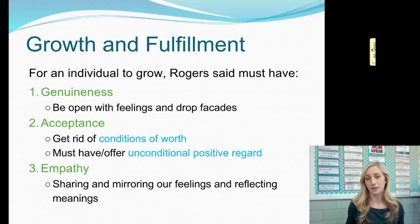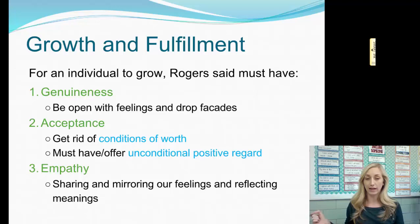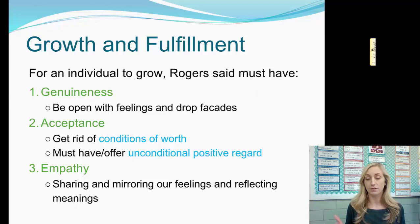Or, you might think your parents won't love you or consider you worthy unless you are a very successful student in school. For this acceptance piece, you must have from others — and offer to others — unconditional positive regard. This means a lack of conditions of worth: those around you unconditionally positively regard you, and 'I'm going to love you unconditionally because I know you are good.' You need to have this for yourself as well. And then lastly is empathy — sharing and mirroring feelings, reflecting meanings for others, being able to put yourself in other people's shoes and experience what they experience, not just feel sorry for them.